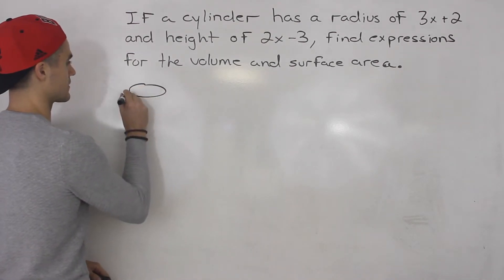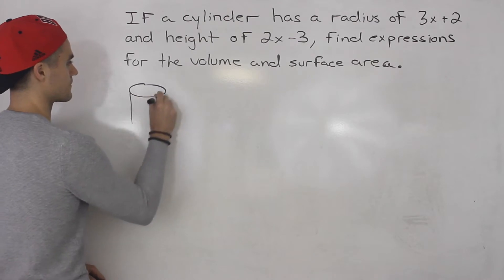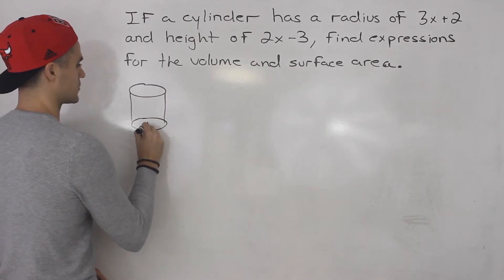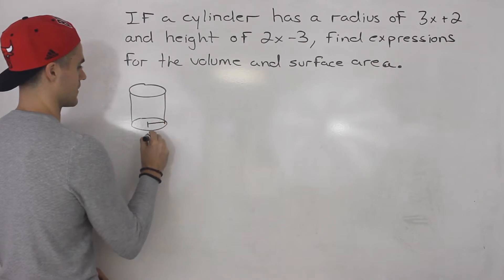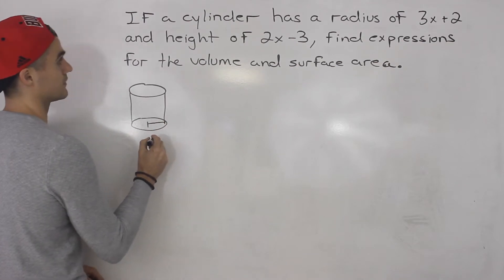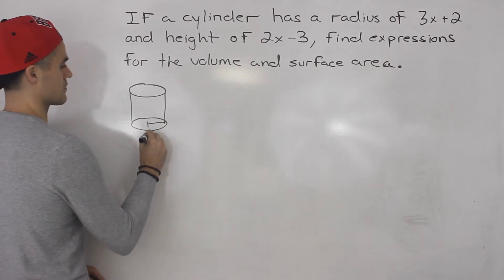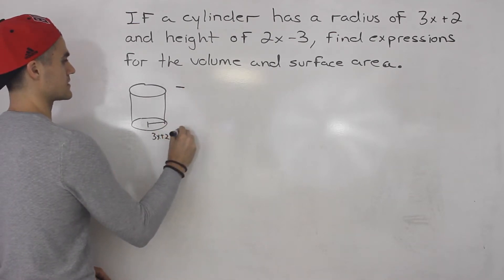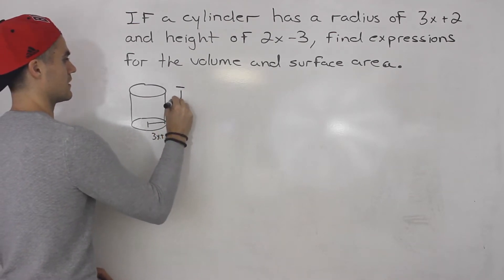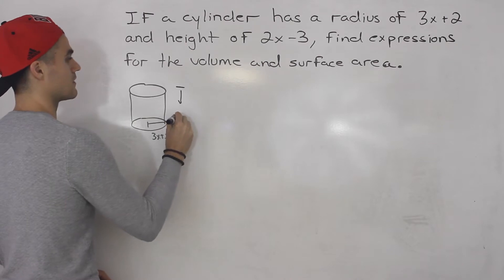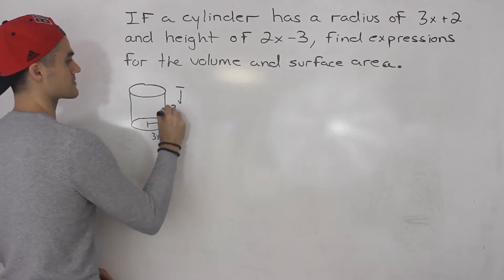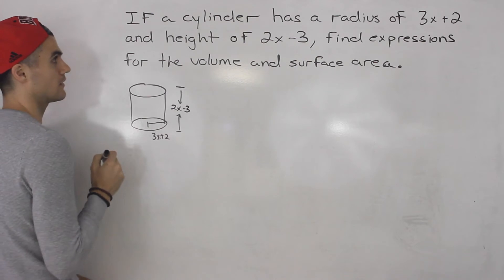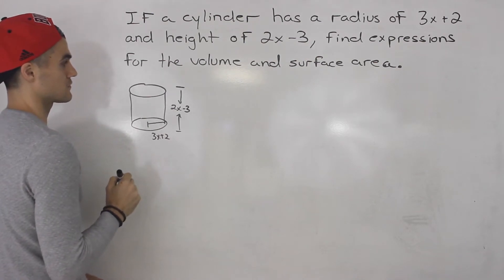So we have this cylinder here and we're told that the radius of the cylinder is 3x plus 2 and we're told that the height of the cylinder is 2x minus 3. So we've got to find expressions for the volume and surface area.